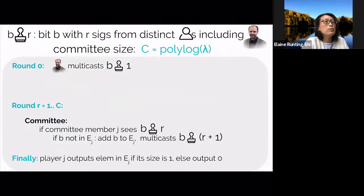Finally, at the very end of the protocol, if a player's extracted set contains a single bit, it simply outputs that bit as the decision. Otherwise, if the set contains either zero bits or two bits, the player outputs a canonical bit zero. This is essentially the Dolev-Strong protocol.